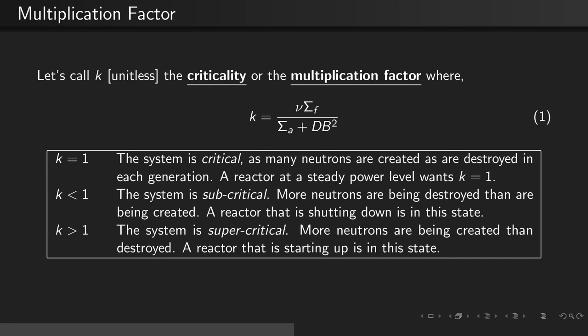When k is greater than 1, the system is called supercritical. More neutrons are being created than are being destroyed. A reactor that is starting up is in this state.